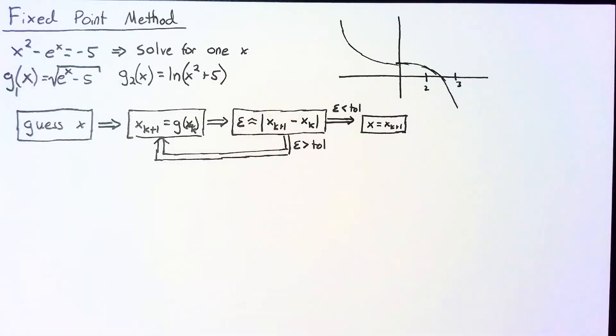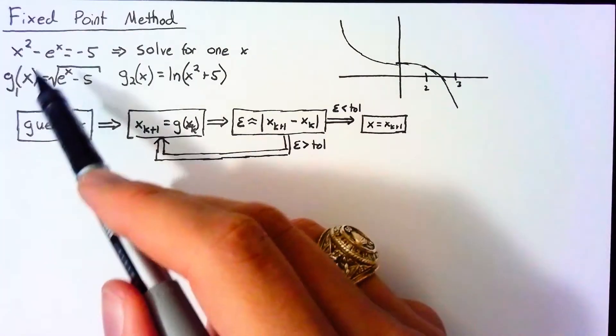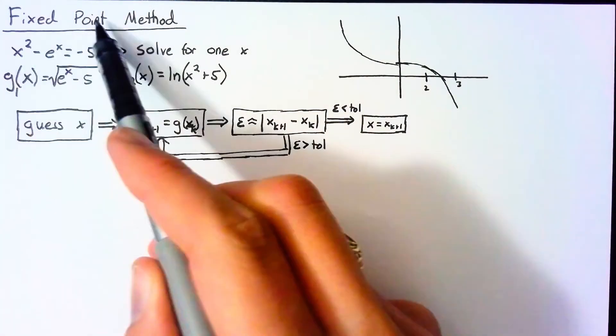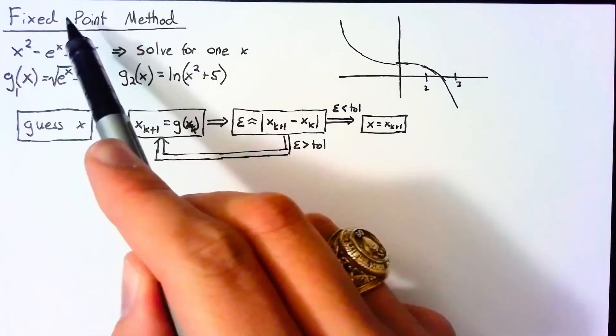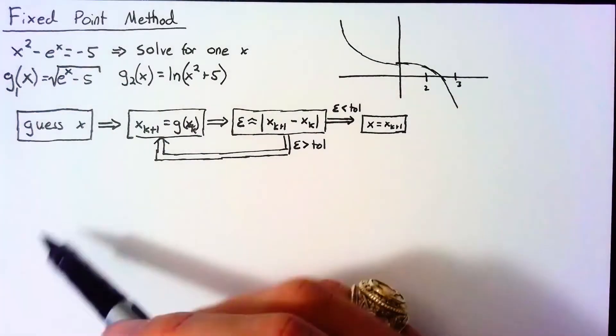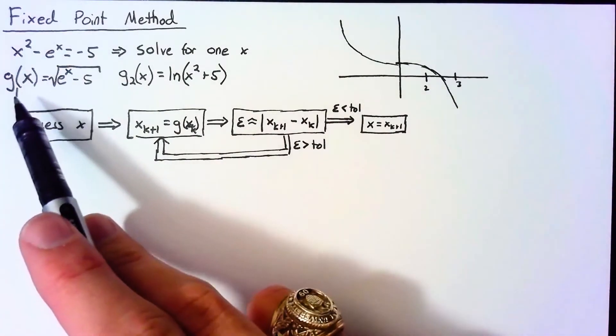And so we just keep running through this process until we stop moving around. Whenever that x stops moving, we've hit what we call a fixed point. So our goal here is to find a fixed point of our function g(x).